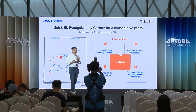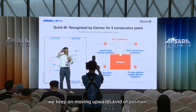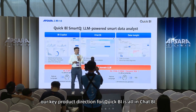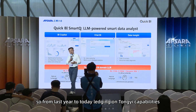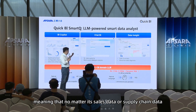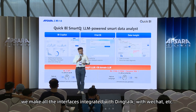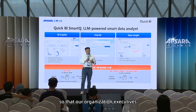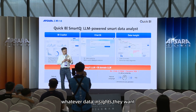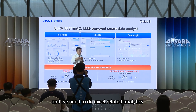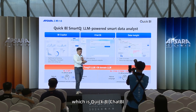Moving to the application side — BI. Quick BI has been the top-listed BI product in China for the last five years, with a continuously upward-moving position. Starting from last year, our key product direction for Quick BI is all-in Chat BI, all-in large language model. We started building Chat BI leveraging Tongyi capabilities, meaning that whether it's sales data or supply chain data, all interfaces are integrated with DingTalk and WeChat, so organization executives can interactively get whatever numbers and data insights they want — moving away from dashboards and Excel to a chat-centered way.